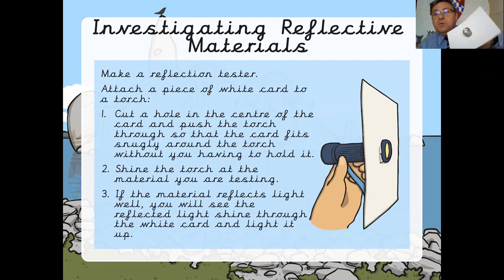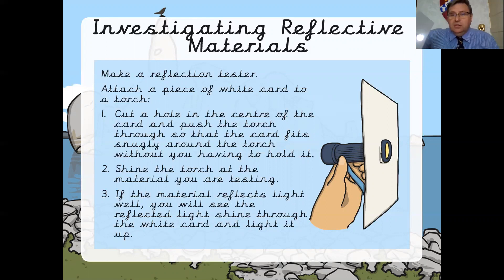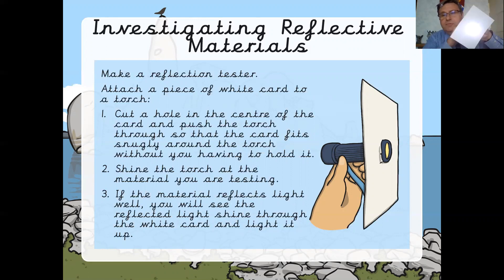It's best when you are testing to do this in a room with the lights off and the curtains drawn, because obviously the darker it is the easier it will be to see the reflection. What you do then is shine the torch at the material being tested and see if the light bounces off the material and back.